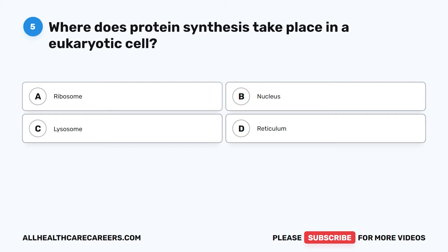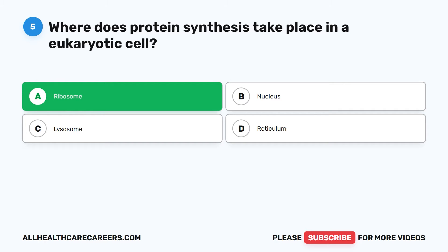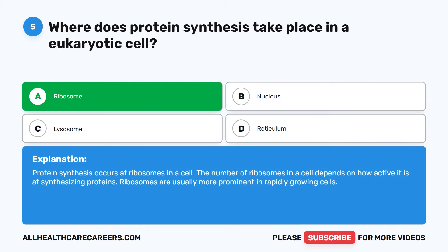The correct answer is A. Ribosome. Protein synthesis occurs at ribosomes in a cell. The number of ribosomes in a cell depends on how active it is at synthesizing proteins. Ribosomes are usually more prominent in rapidly growing cells.